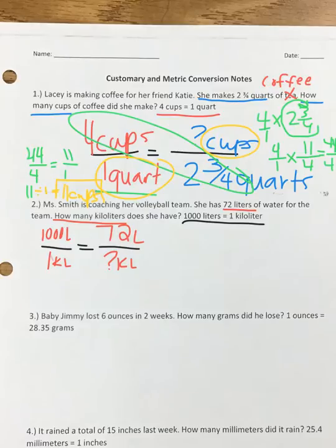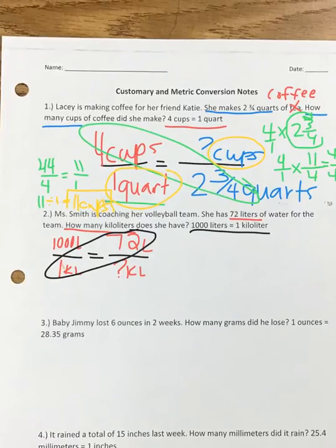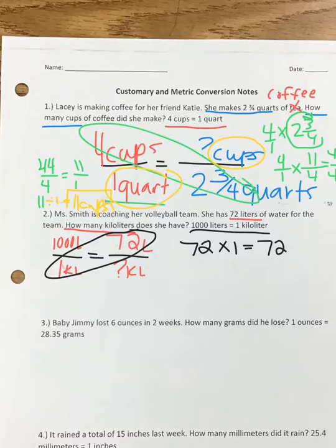Just like we've been doing, solve the proportion by multiplying your diagonal and dividing by what's left. 72 times one gives us 72, and then we need to divide by what's left, which is 1,000.